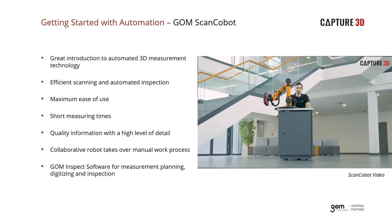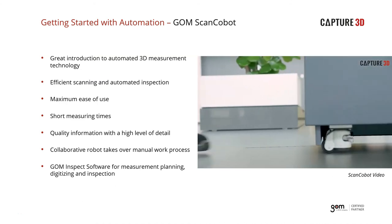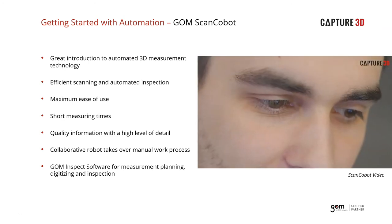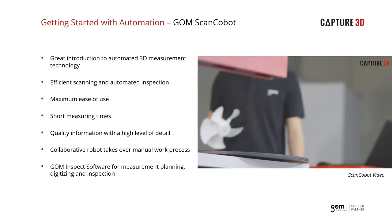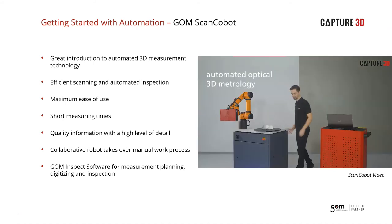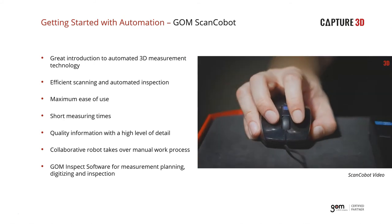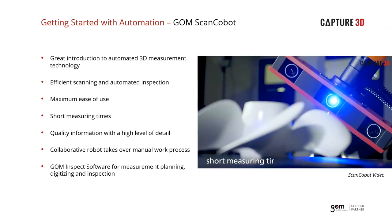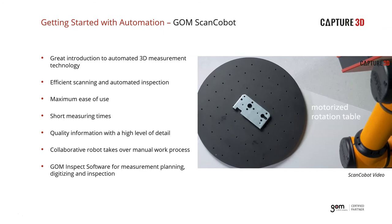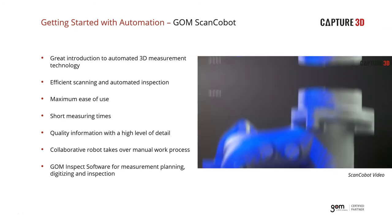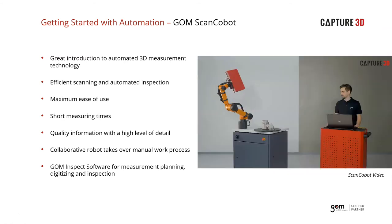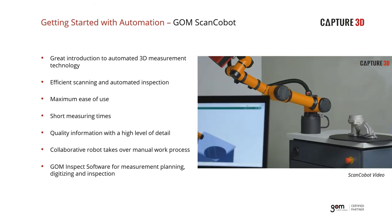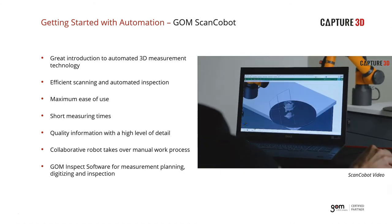The GOM Scan Cobot is a great introductory way to step into automating your scanning and inspection processes. It's a very small, portable system that can be rolled with one person into your quality area or moved to another part of your facility. Since it's a cobot, everything is safe — no sensors to worry about, no risk of injury. You also have access to our VMR, the virtual measuring room, which is how we program all of our automation. Everything is done within the software rather than moving things around by hand — it almost looks like a video game.